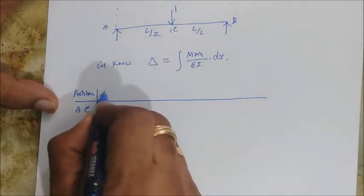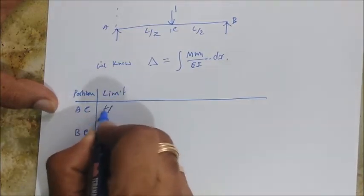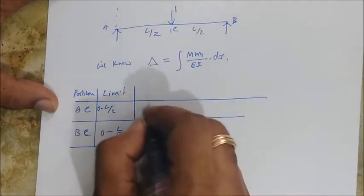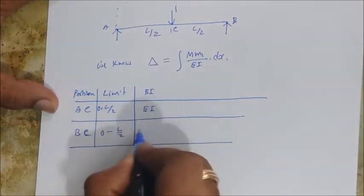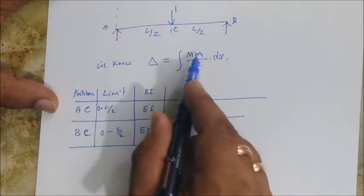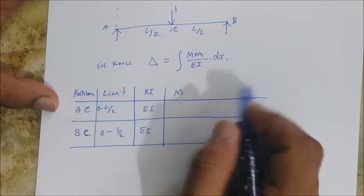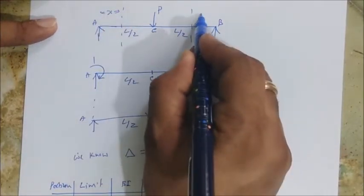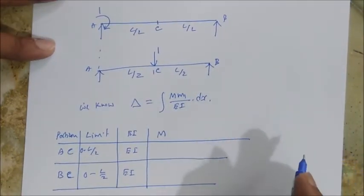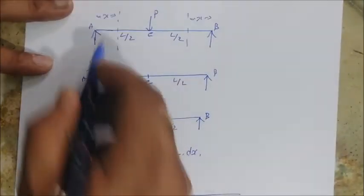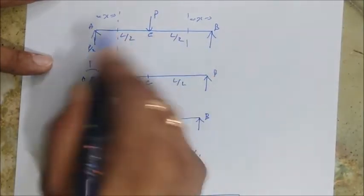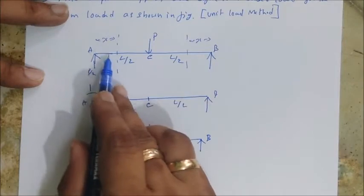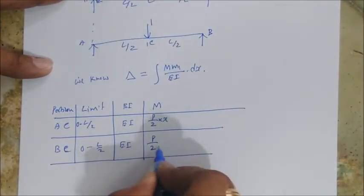We'll set up a table of form. The portion will be AC and CB. The limits are 0 to L/2 for both regions. EI — there is no change in EI, so EI remains constant. Now I need to write M, the bending moment due to the applied load. Taking a section at distance X from A: the reaction at A is P/2 since the beam is symmetrical. So M = P/2 · X, which is a sagging moment, taken as positive.